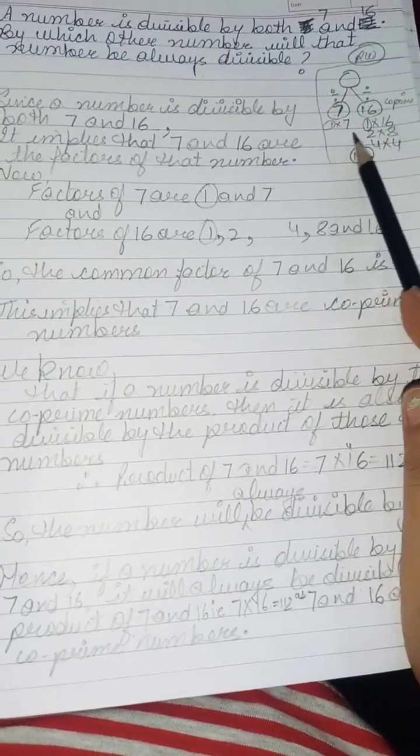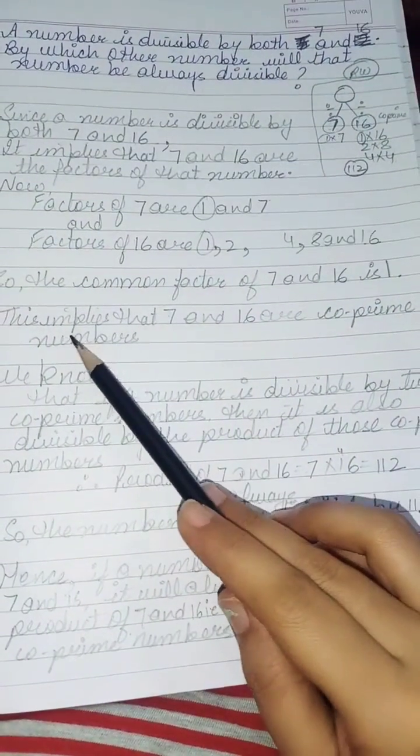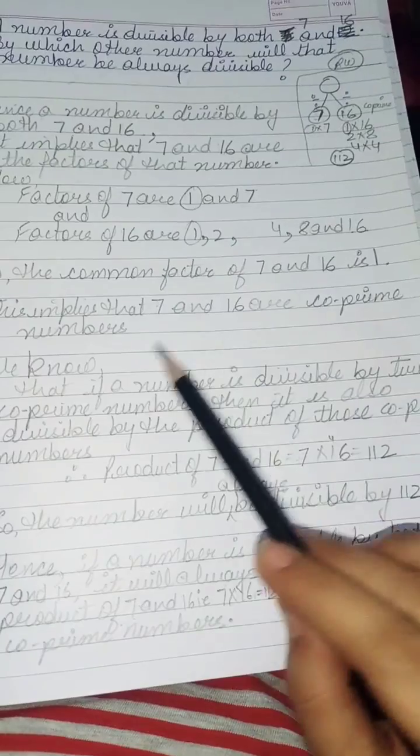So this means that the common factor of these two numbers is 1, which implies that 7 and 16 are co-prime numbers.